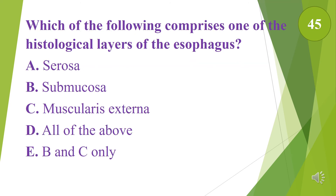Which of the following comprises one of the histological layers of the esophagus? A. Serosa. B. Submucosa. C. Muscularis externa. D. All of the above. E. B and C only. The answer is E, B and C only. Remember that the esophagus does not have a serosa layer.